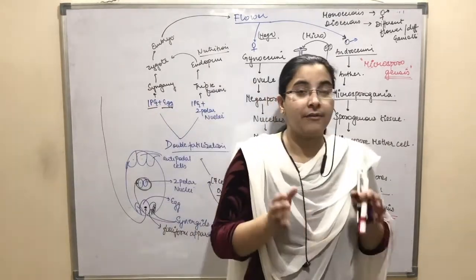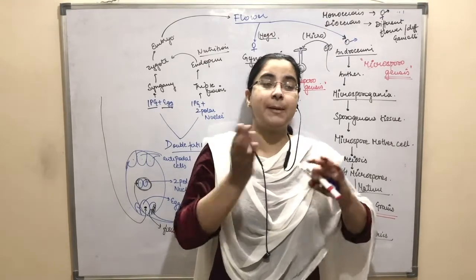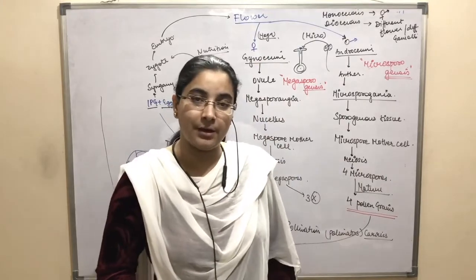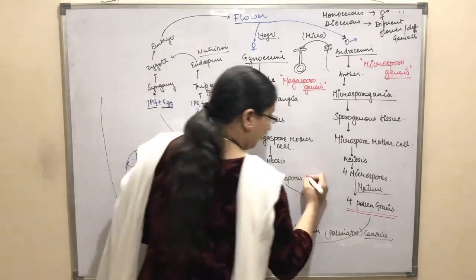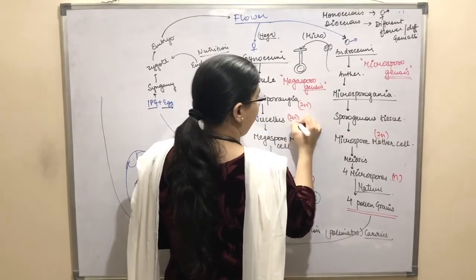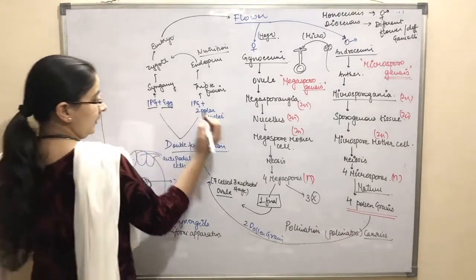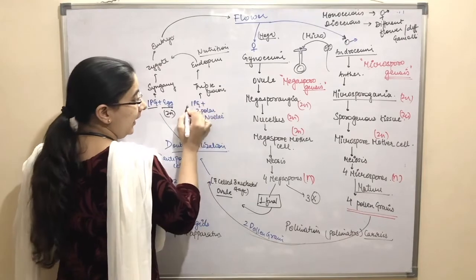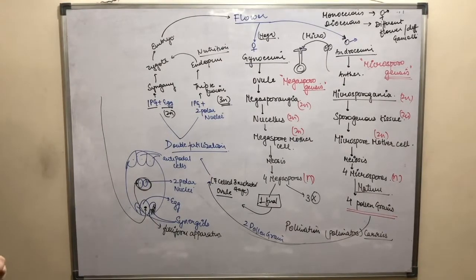When we talk about gametes or meiosis products being made, they are always haploid. The microspores and megaspores - their ploidy will be half, haploid. Here one difference: through fertilization this is 2N diploid. Here triple fusion happens - one pollen grain and two polar nuclei, that's three, so triple N, 3N ploidy for endosperm development.